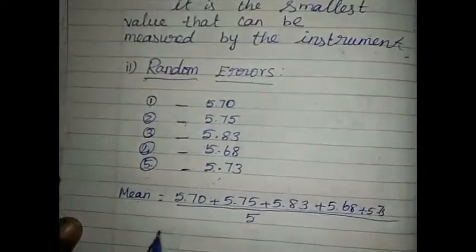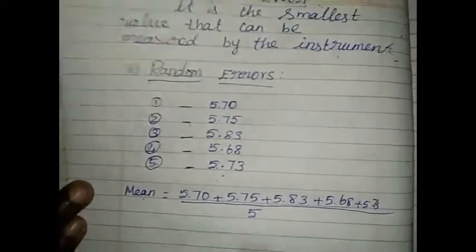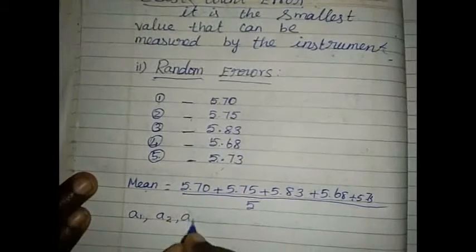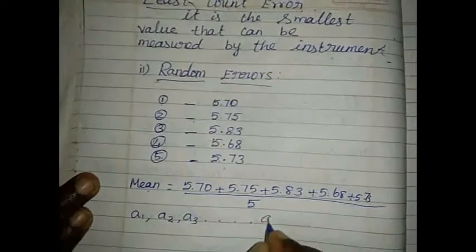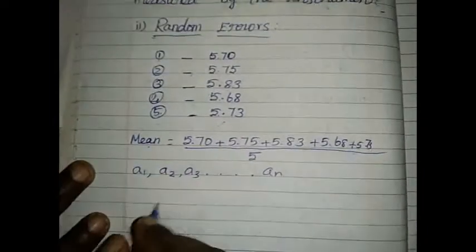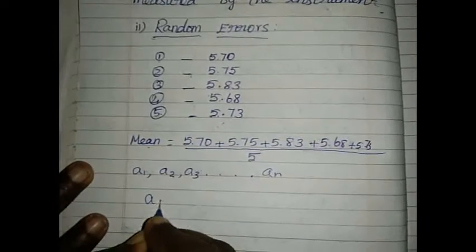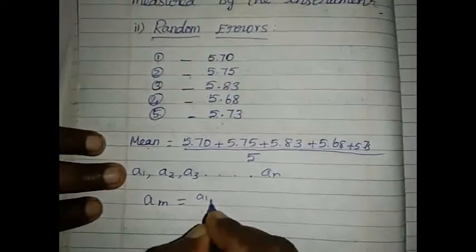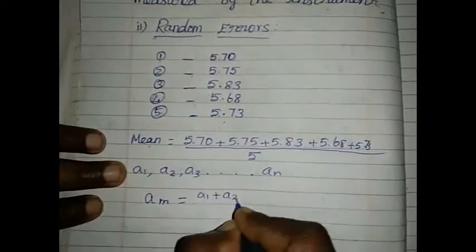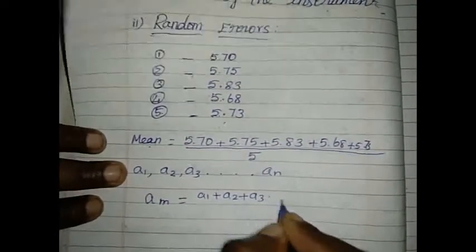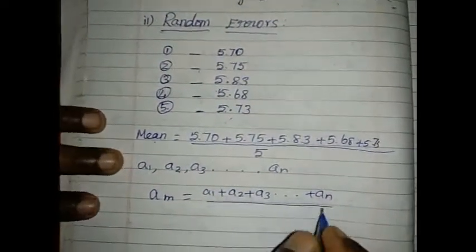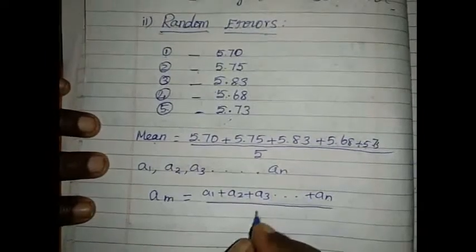Now, if the number of trial readings are a1, a2, a3 up to an, the arithmetic mean is equal to sum of a1 plus a2 plus a3 up to an divided by total number of trials n.